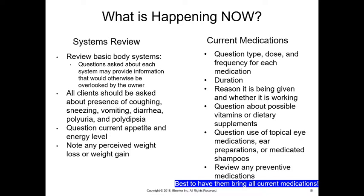Our physical exam starts with questions. We review basic body system questions using our standardized form — questions asked about each system provide information that might otherwise be overlooked by the owner. Remember, you're trained to look at the whole animal; they are not. You'll ask specifically about coughing, sneezing, vomiting, diarrhea, polyuria, and polydipsia — that's increased urination and increased drinking. A dog brought in for vomiting and diarrhea may also have been coughing recently, which is actually very important information.